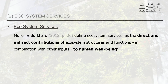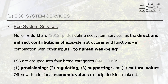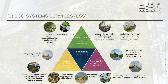Humankind benefits in a multitude of ways from ecosystems. Ecosystem services are defined as the direct and indirect contributions of ecosystems, structures and functions, in combination with other inputs, to human well-being. The ecosystem services concept itself was popularised by the Millennium Ecosystem Assessment, where it was grouped into four categories: the first provisioning, then regulating, next supporting, and finally cultural values. Provisioning includes for instance the production of food and water, while regulating includes for instance the control of climate and disease. Supporting refers to support of nutrient cycles and crop pollination, while cultural values include spiritual and recreational benefits.